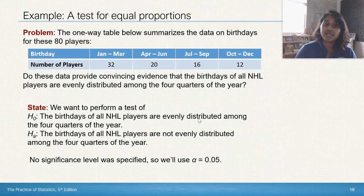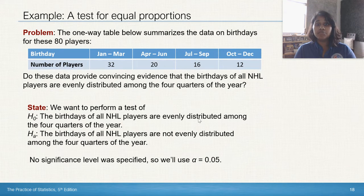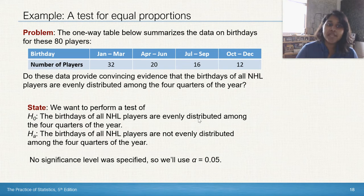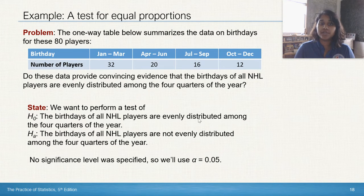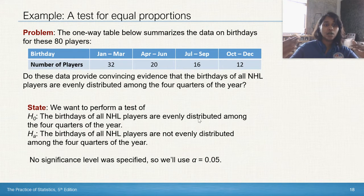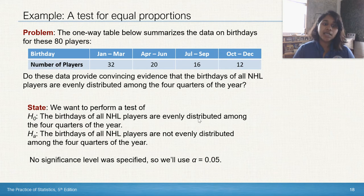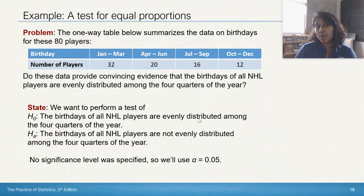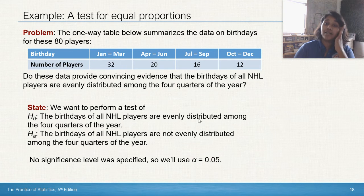So state, we want to perform a test of the null hypothesis. In content, it agrees. The alternate hypothesis, in content, it disagrees. So the birthdays of all NHL players are evenly distributed among the four quarters of the year. Alternate, the birthdays of all NHL players are not evenly distributed among the four quarters of the year. See that? How easy is that? The null and the alternate will literally just be like, yes, it is. No, it ain't. No significance level was specified. So I'm going to go ahead and use alpha 0.05 or 95% confidence level.